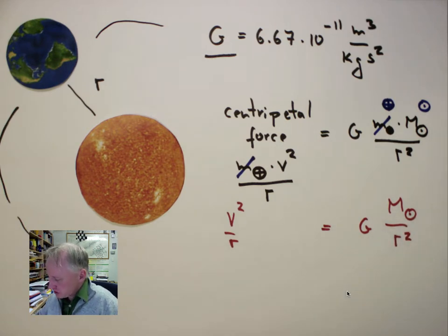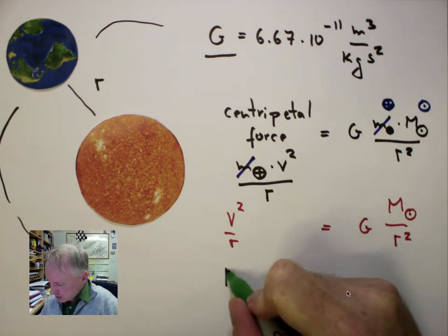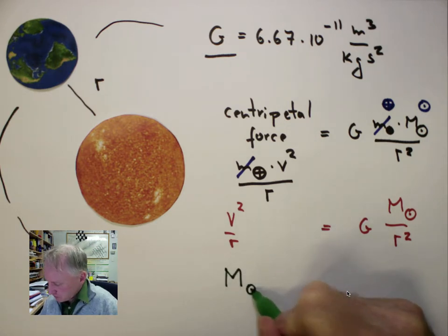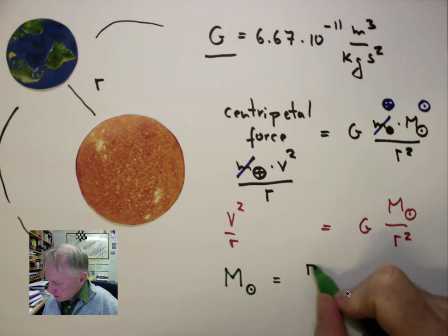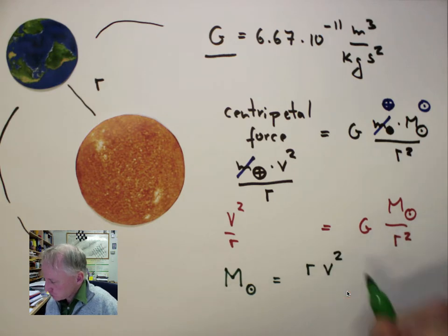That can be rearranged, so that we isolate the solar mass as M solar, equal to radius of the orbit r, times linear speed of the Earth squared, divided by G.